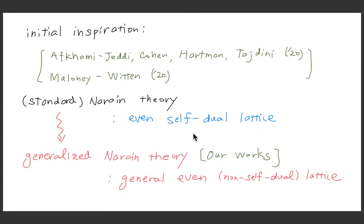I'm not going to discuss all the differences today — please refer to the paper. But at least I should say that there are two papers which were the initial inspiration for us, listed here. They discussed the ensemble average of Narain theory and discussed the connection to holography. What they discuss is the standard Narain theories associated with D-dimensional toroidal compactifications, which is based on the even self-dual lattice. We started by generalizing that to even but not self-dual lattices — so a general even lattice. We call it the generalized Narain theory, and it seems there are very rich stories present only for the non-self-dual cases, which is extremely crucial for the discussion of emerging global symmetry.